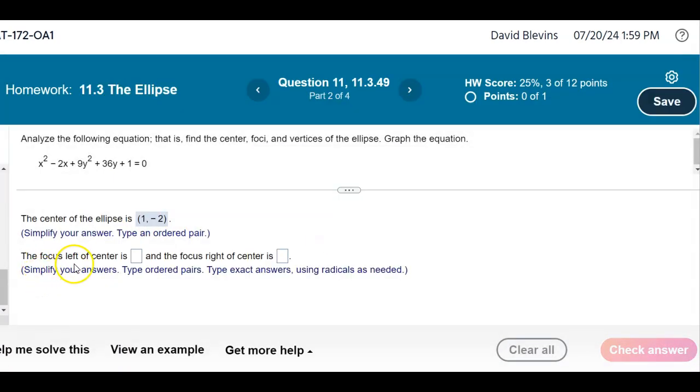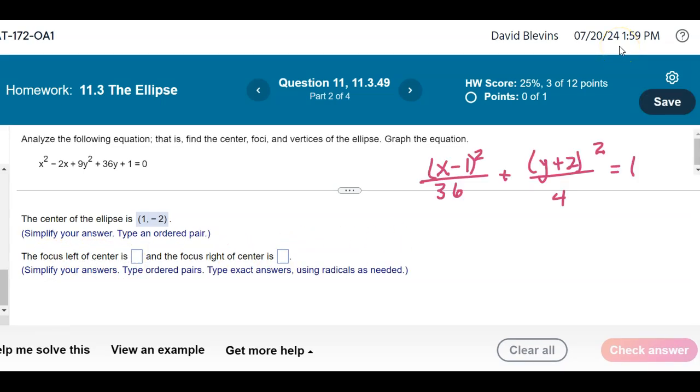It wants to know the focus left of center and the focus to the right. For an ellipse, c squared equals a squared minus b squared. This is a squared, this is b squared. So c squared equals 36 minus 4, so c squared is 32. That means c is the square root of 32. Because 32 is divisible by 16, which is a perfect square, I can write this as the square root of 16, which is 4 times the square root of 2.